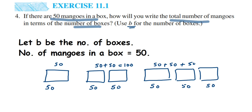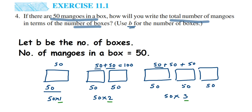Instead of repeated addition, let's use multiplication. One box: 50 × 1. Two boxes: instead of adding 50 twice, we multiply 50 × 2. Three boxes: instead of 50 + 50 + 50, we write 50 × 3. For 100 boxes, we write 50 × 100. Notice that 1, 2, and 3 here are the number of boxes.